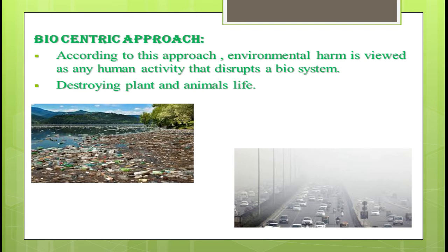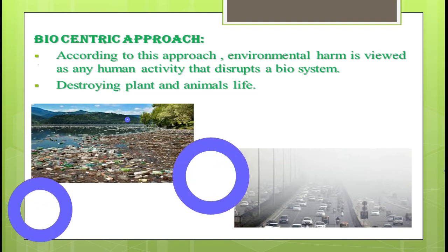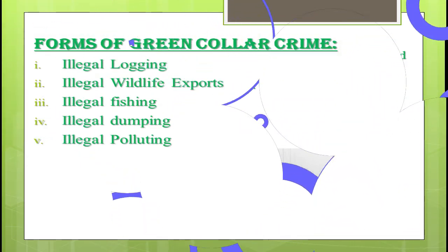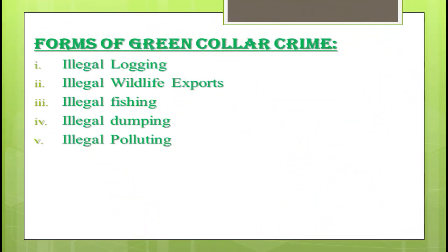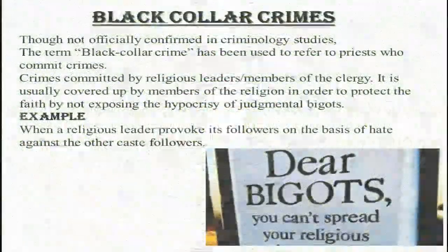According to the biocentric approach, environmental harm is viewed as any human activity that disrupts a bio-system or destroys plant and animal life. Some important forms of green-collar crimes are illegal logging, illegal wildlife exports, illegal fishing, illegal dumping, and illegal polluting.